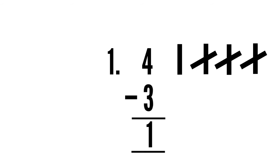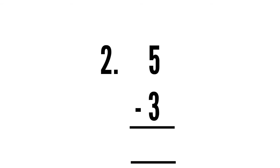Now count the leftover lines. One line is left. What is the answer? Four minus three is one. Let's do sum number two. Sum number two is five minus three. First you have to think which number is bigger here.